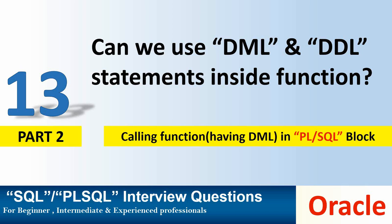If someone is watching this video series for the first time, I would suggest watching part 1 so you will be able to understand much better. Now, in the previous video we established that whenever there is a DML statement inside a function, we will not be able to call that function directly in a SELECT statement, because the SELECT statement is supposed to be read-consistent and should not change the state of the database in the same transaction. As a workaround, we can use an autonomous transaction so that the function can be called from the SELECT statement.